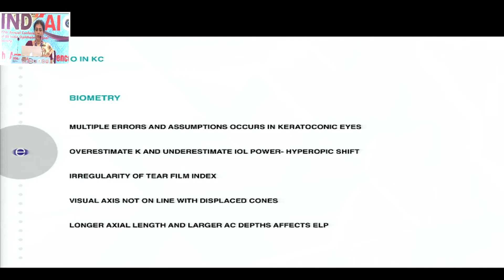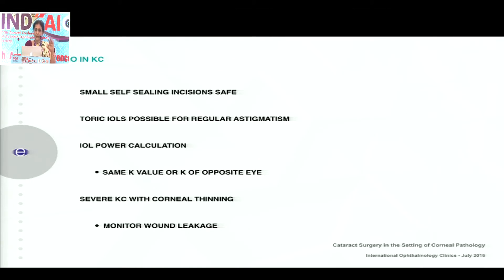Going on to keratoconus, the challenge becomes greater. There will be multiple errors in biometry, and a lot of assumptions are taken in a keratoconic eye. You might end up overestimating your K value, leading to underestimation of your IOL power. The irregularity of the cornea causes irregularity of the tear film, and the visual axis is not in line in displaced cones. Many keratoconic eyes are myopic with a long axial length and larger anterior chamber depth, which affects effective lens position. Best to use the latest formulae. Make small self-sealing incisions. In early keratoconus, the central visual axis is fine and you could place a toric IOL to debulk the astigmatism. In severe cases with corneal thinning, you need to monitor wound leakage.